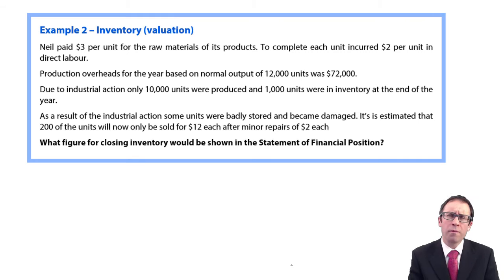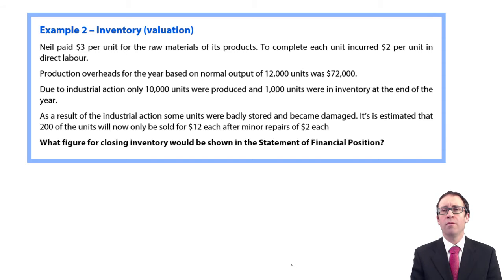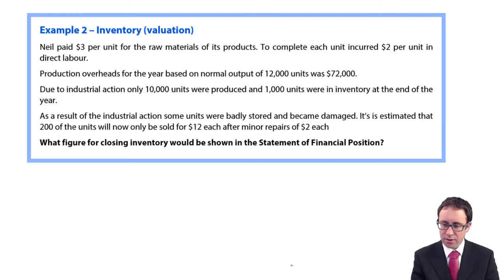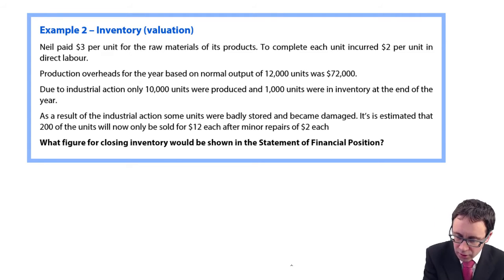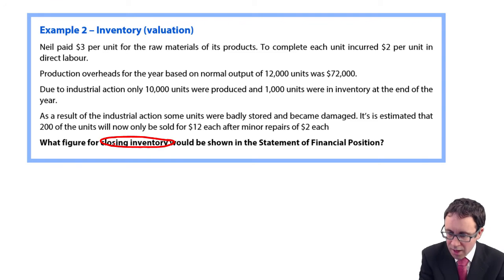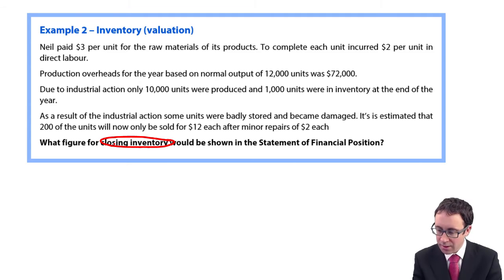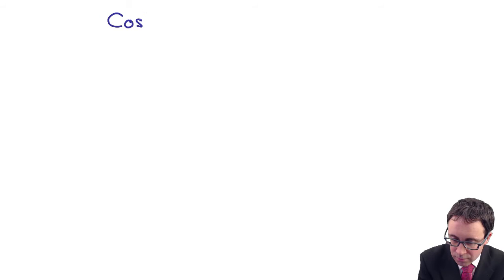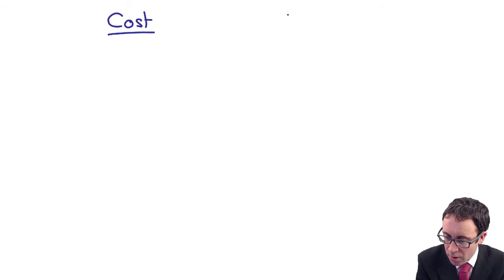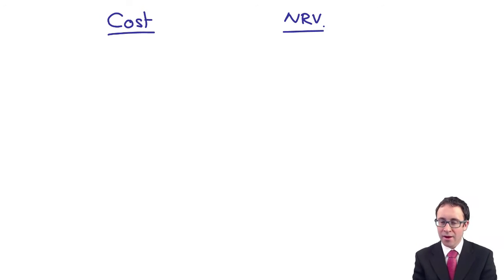Next one — a little bit more challenging. Could be a multiple choice question, but could also form part of an individual company accounts question. What is the figure for closing inventory that will be shown in the statement of financial position? Closing inventory is valued at the lower of cost and net realisable value. So we're going to have to look at the cost and also the NRV — the net realisable value.